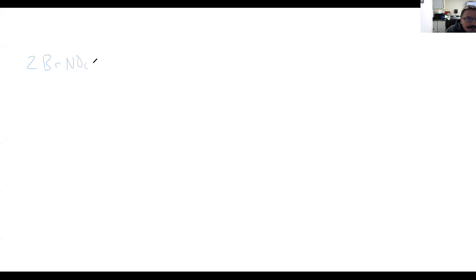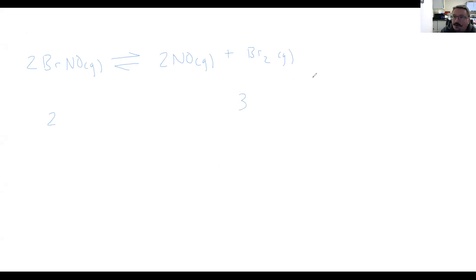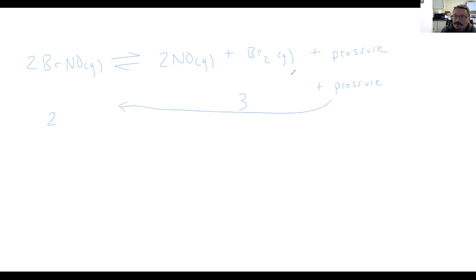Let's take a couple of sample reactions. Take this one: 2BrNO gas goes to give us 2 moles of NO gas and 1 Br₂ gas. Everything here is a gas — I have 2 moles of gas on the reactant side and 3 moles of gas on the product side. I can think of the side with the additional moles of gas as also having pressure as one of its components. So pressure is a product here because the product side has the larger number of gas molecules. If we increase the pressure, we're essentially adding product, and adding a product pushes it in the other direction — towards the reactant side, decreasing the number of gas molecules.